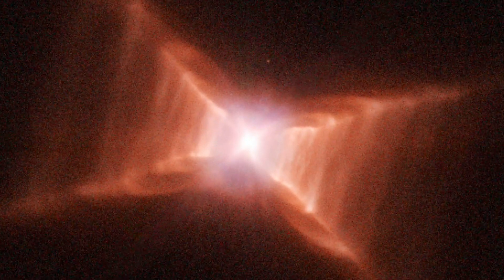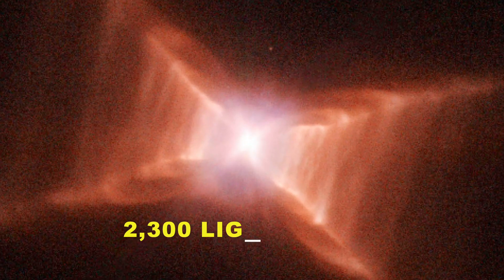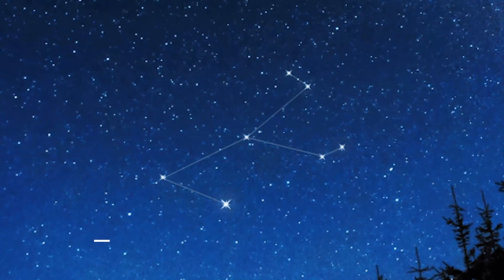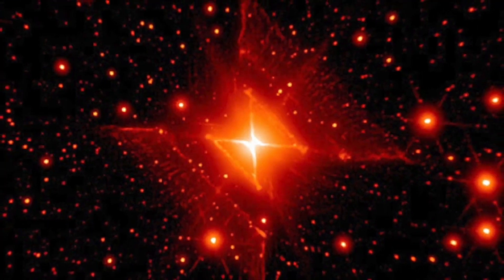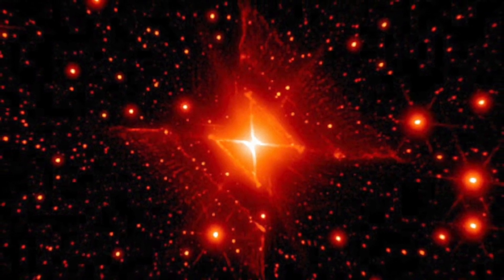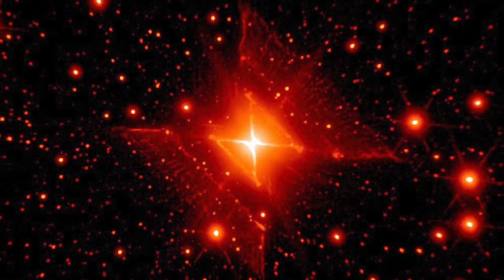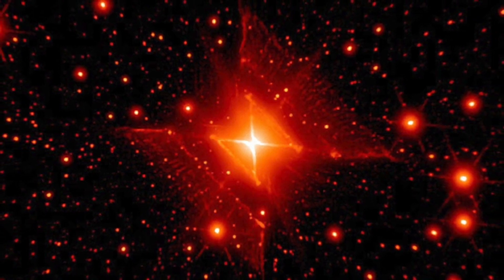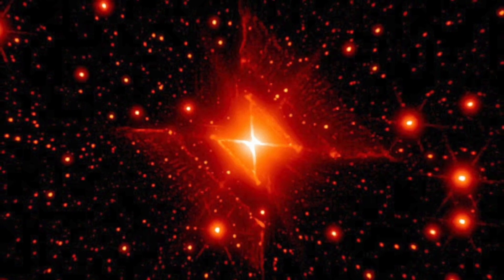The Red Rectangle nebula lies about 2,300 light-years away towards the constellation of the unicorn Monoceros. The nebula is shown here in great detail as a recently reprocessed image from Hubble Space Telescope. In a few million years, as one of the central stars becomes further depleted of nuclear fuel, the Red Rectangle nebula will likely bloom into a planetary nebula.